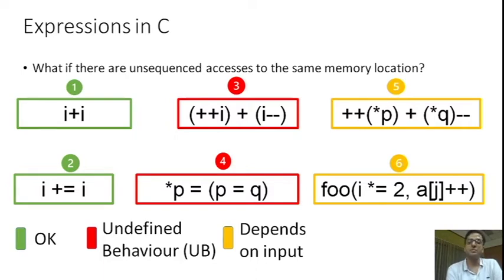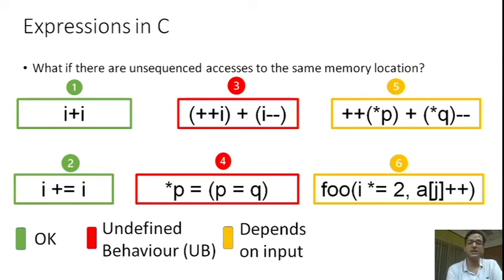For example, if star P and star Q refer to the same object, say i, then this expression would yield undefined behavior. On the other hand, if star P and star Q refer to different objects, then this is a legal expression and it would evaluate to a well-defined value. Now consider expression 6. It has two side effects which are mutually unsequenced. The evaluation of this expression would be well-defined only if A[j] is known to not alias with i. If A[j] refers to the same object as i, then the evaluation would be undefined.